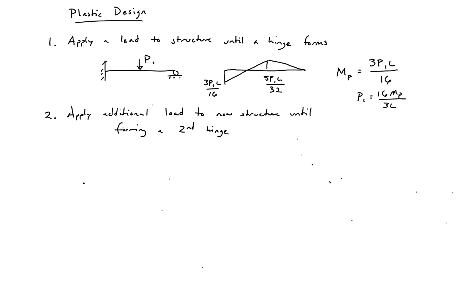Our new structure, as we saw from the previous video, will have a hinge at the end where we reached our plastic moment, and we'll still have a roller at the other end. So now we just have a simply supported section. We're going to apply an additional load P2 until we have a moment equal to the plastic moment at the center. We know our moment diagram looks like this with a moment of PL over 4 at the center.